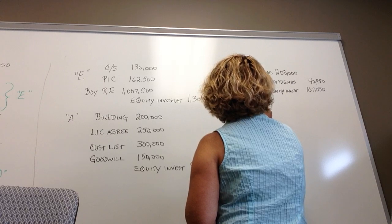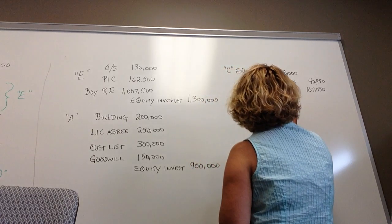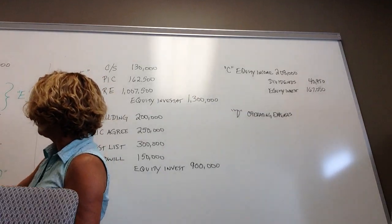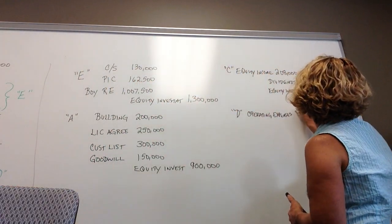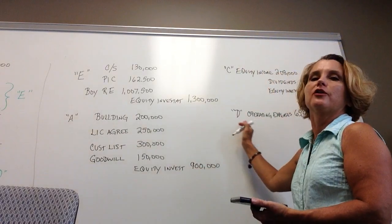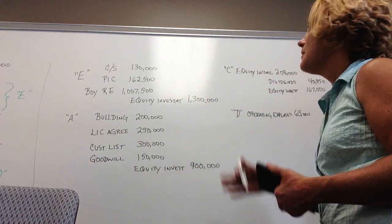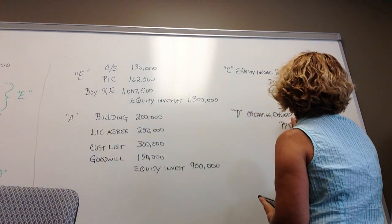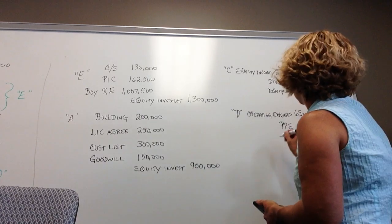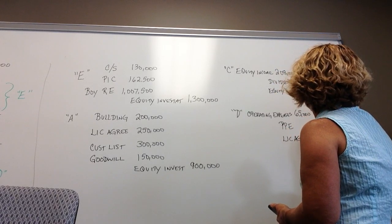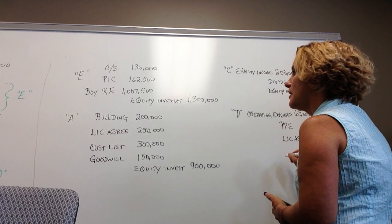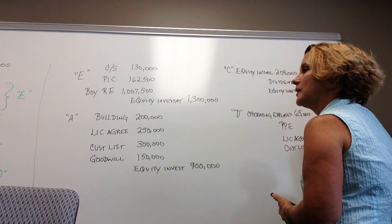The D entry records depreciation and amortization on the AAP assets. The debit goes to operating expenses for the total of $65,000. Credits go to specific asset accounts: property, plant, and equipment (building) for $10,000; license agreement for $25,000; and customer list for $30,000.